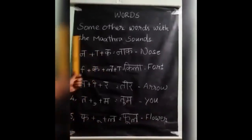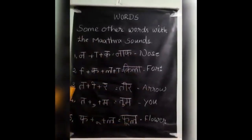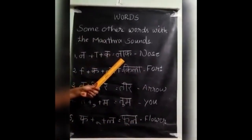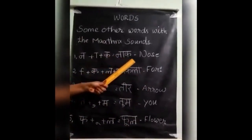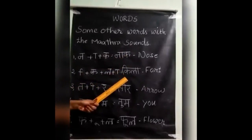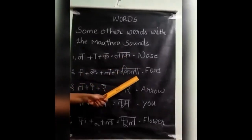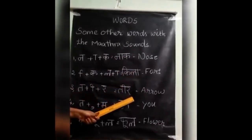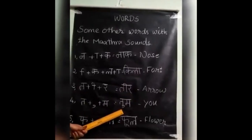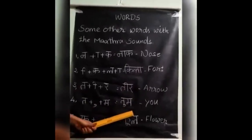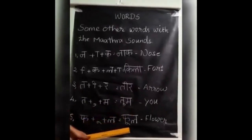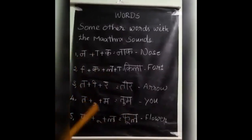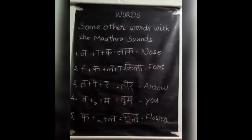Ok children, these are the matra sound words. Aaki matra — naak. Eki matra — khila. Eki matra — teer. U ki matra — tum. U ki matra — fool. Are you clear children? Ok. Thank you children.